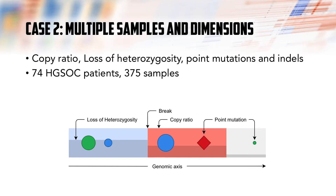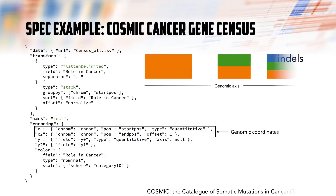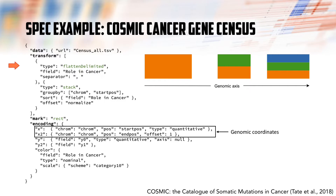Unfortunately, the specification is too large to be shown here. However, the visualization also contains an annotation track. The COSMIC cancer gene census is a set of cancer-related genes. Each gene has a number of attributes, including the genomic coordinates and the role in cancer. Because genes may have multiple roles, the visualization design requires some creativity. In this example, the census data is first transformed — the comma-separated roles are split or flattened, and subsequently a stacked layout is computed. Finally, each role is displayed as a stacked colored rectangle.